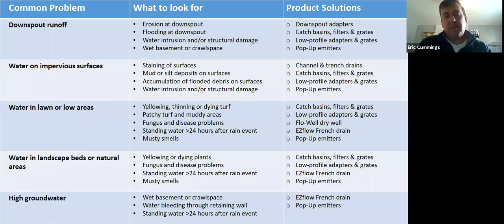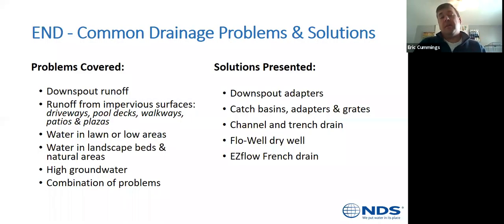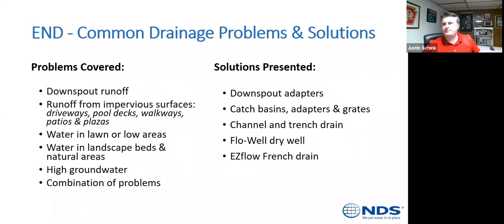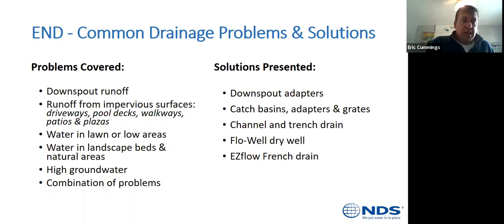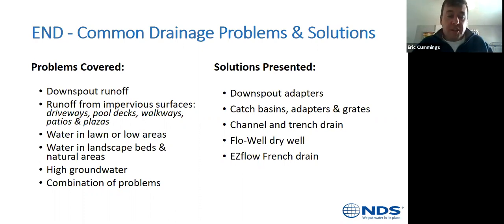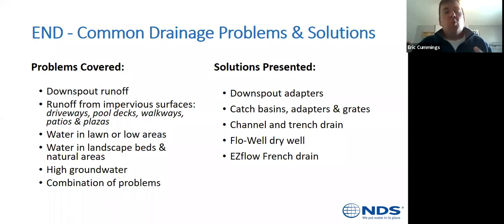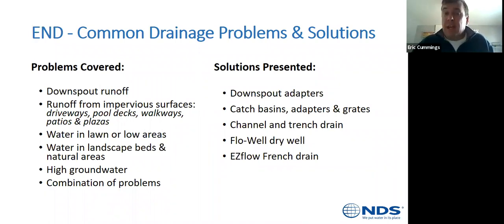That cross-reference sheet is now back on screen — do a screen capture or let me know if you need me to come back to it. To summarize: downspout runoff is handled by downspout adapters and catch basins; impervious surface runoff by channel drains; water in lawns or low areas by easy flow and flow wells; landscape beds by atrium grates; high groundwater by easy flow and flow wells. Our products are designed to work together — catch basin, channel drain, flow well, easy flow, and emitter can all be tied into one comprehensive system.